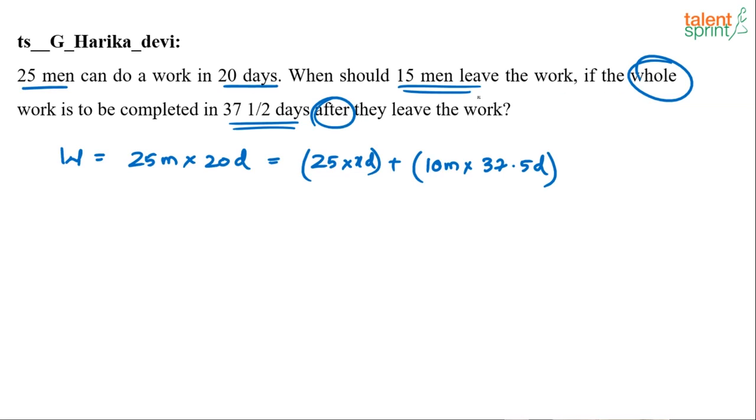So let's assume we just go by this. If the work is completed in 37 and a half days after they leave the work. After they meaning after these 15 men leave the work. So after 15 men leave the work, there will be only 10 men who will work for 37.5 days.